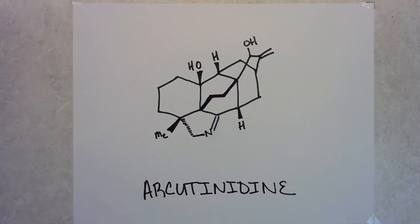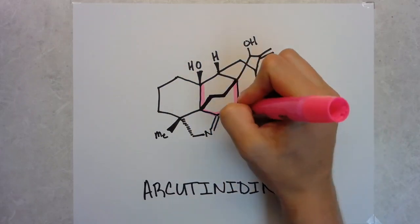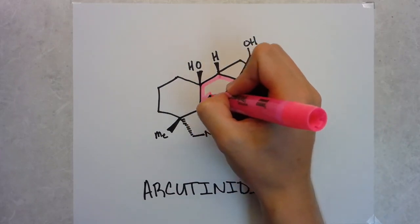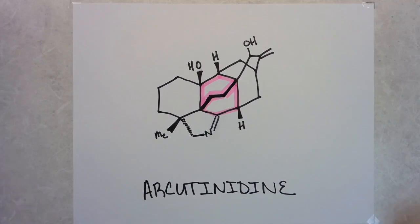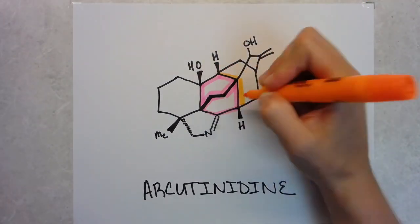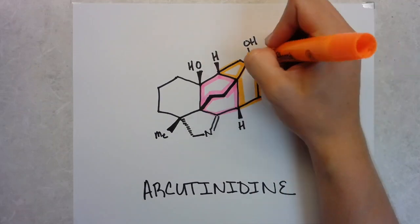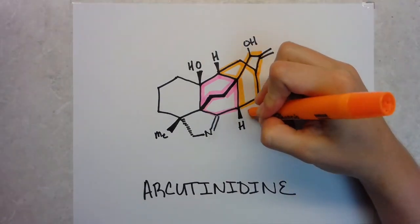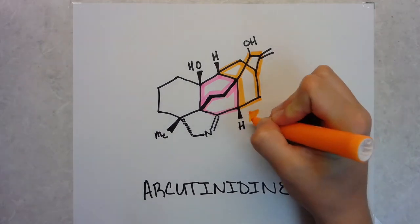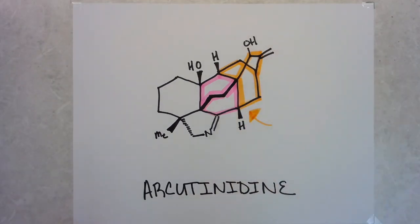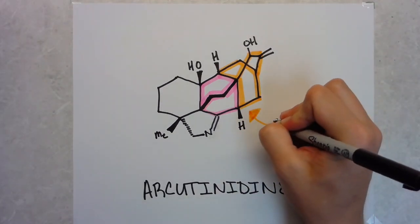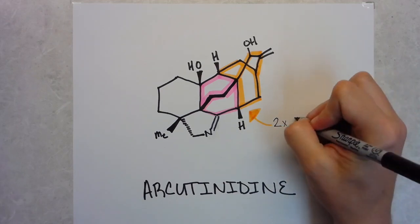These diterpenoid alkaloids are made up of 20 carbons, or they're a C20 unit, because they're derived from five isoprene subunits. There have been over a thousand of these diterpenoids that have been isolated from natural products and identified. The family that we're focusing on today is the arcutine family. These ones are of interest as they haven't had a significant amount of synthesis effort put towards them yet, and they have a very complex three-dimensional multicyclic structure.